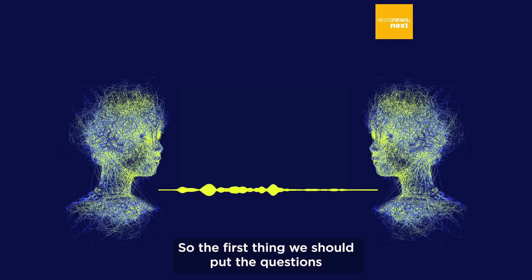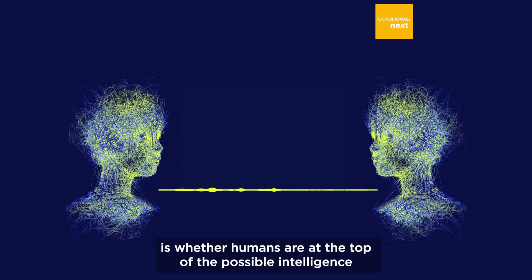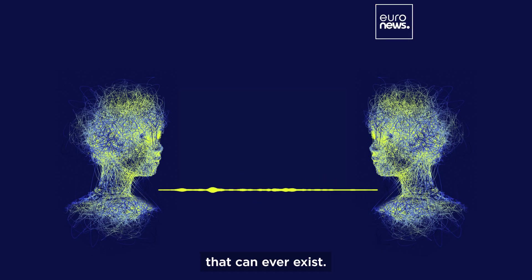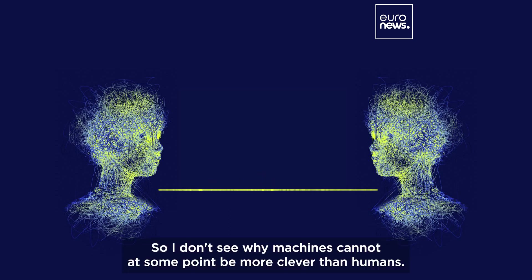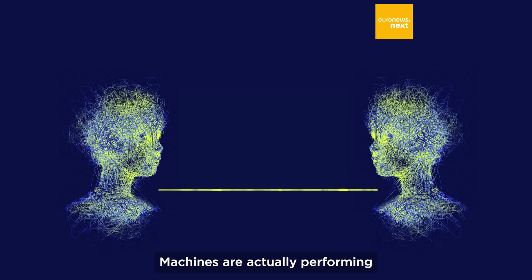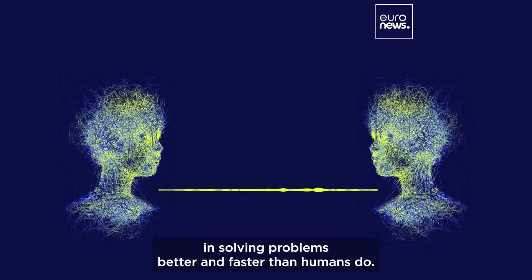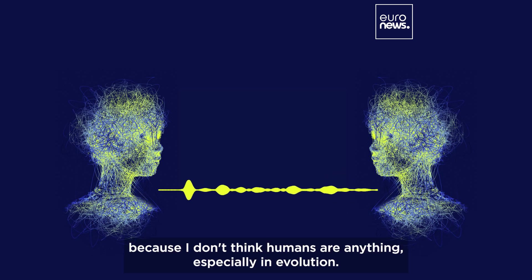So the first question we should put is whether humans are at the top of the possible intelligence that can ever exist. I don't see why machines cannot at some point be more clever than humans. Machines are actually performing and solving problems better and faster than humans do. I don't see that as a drama because I don't think humans are anything special in evolution.